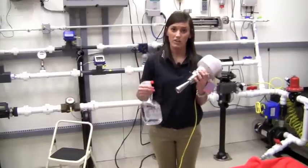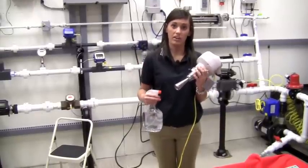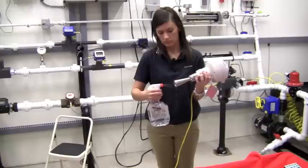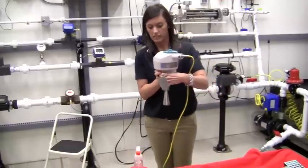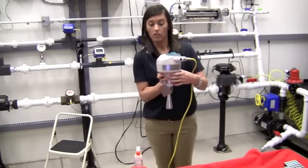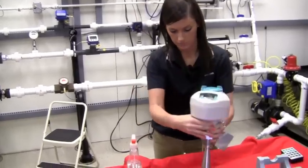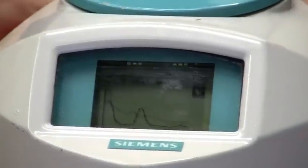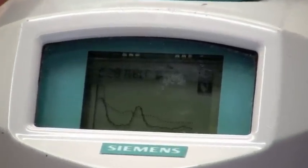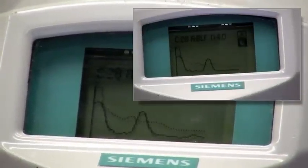Now I'm going to spray water on the inside of the horn to represent condensation buildup. Now we're going to take a level measurement and look at the echo profile. You can see how the dynamic threshold moves up so that the condensation does not affect the signal.